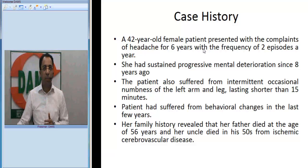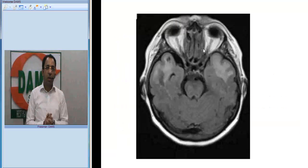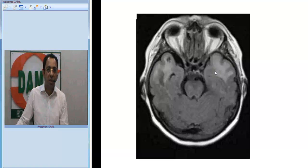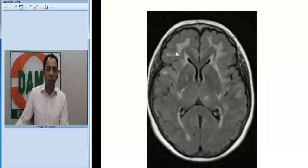An MRI brain was advised. Looking at this first FLAIR MRI image, you can see abnormal signal in the anterior temporal lobe. There are also confluent subcortical white matter abnormalities more so in the frontal lobe and around the lateral ventricles, and you can see abnormal signal along the external capsule.